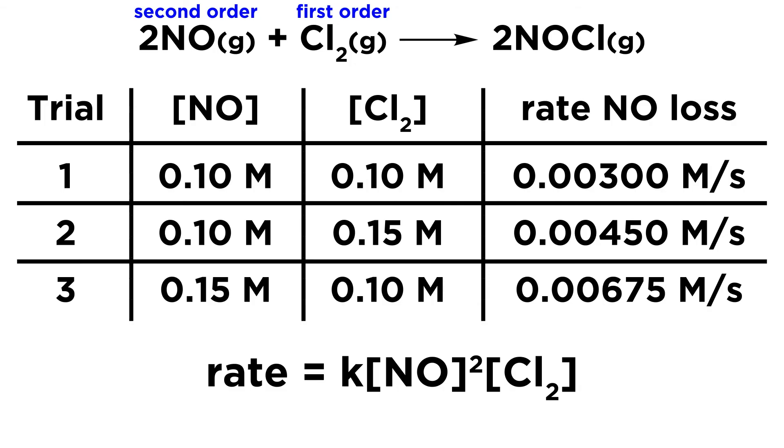So now that we know that the reaction is second order with respect to NO and first order with respect to Cl2, we can find this rate law. And the rate law is going to be as follows. The rate equals K times the concentration of NO squared, because it is second order with respect to NO, times the concentration of Cl2, with no exponent, because it is first order with respect to Cl2.